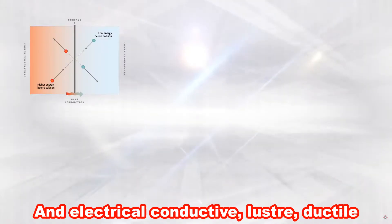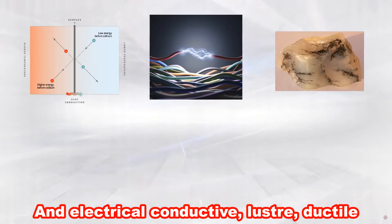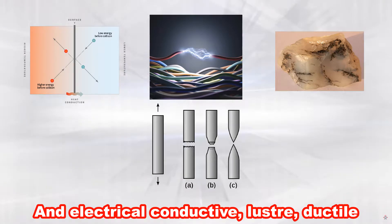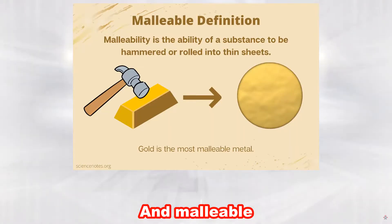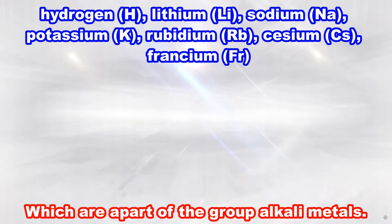Alkali metals are all highly thermal and electrical conductive, have lustre, are ductile and malleable. These are all the elements which are a part of the group alkali metals.